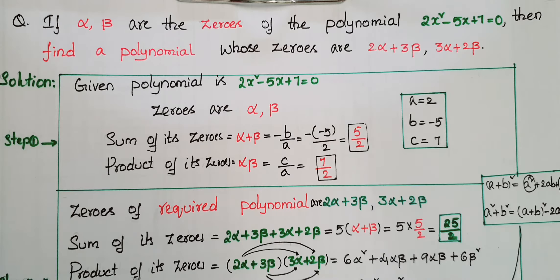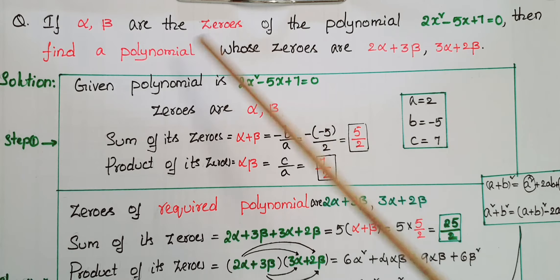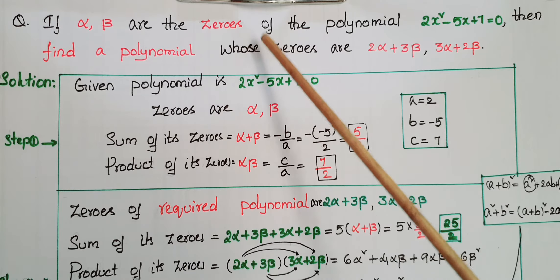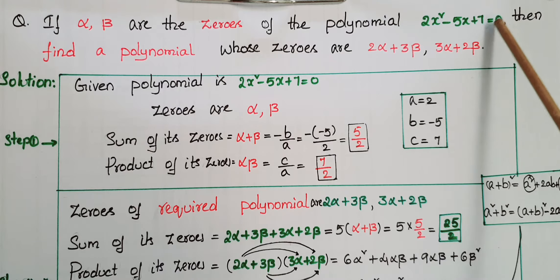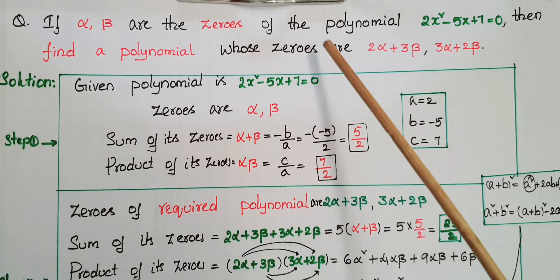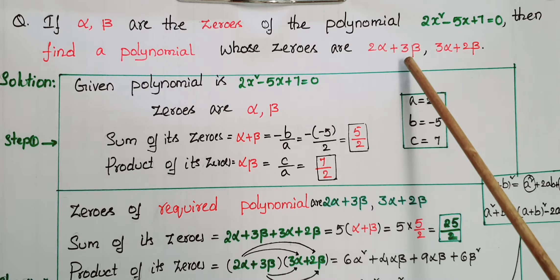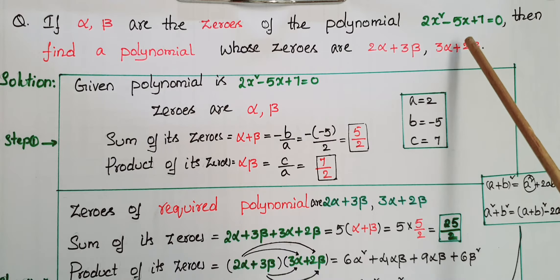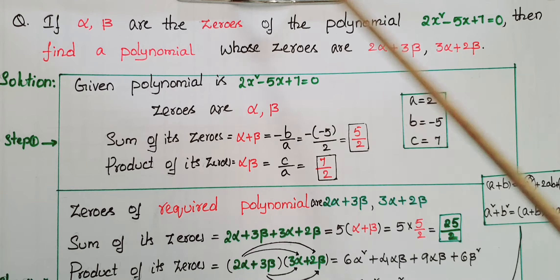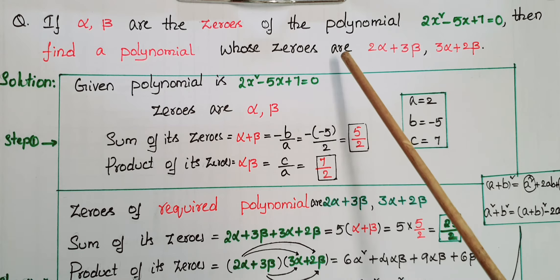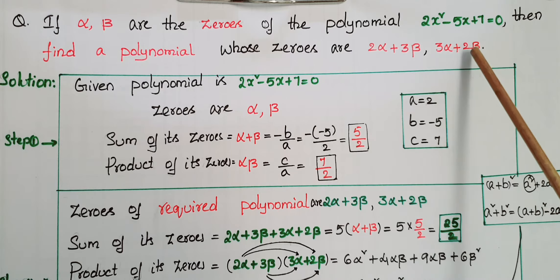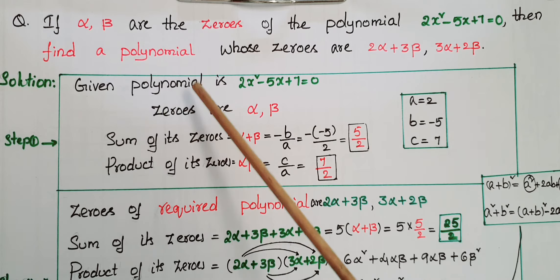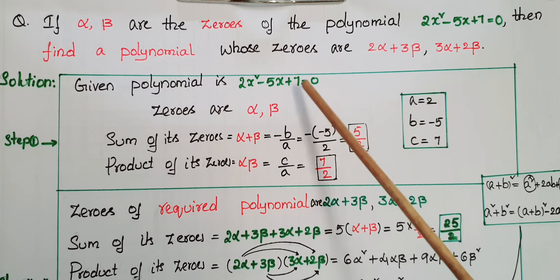Today I am going to tell the solution of the given problem. If alpha and beta are the zeros of the polynomial 2x² minus 5x plus 7 equals 0, then find a polynomial whose zeros are 2α+3β and 3α+2β. Here in the first polynomial the zeros are alpha and beta, and we have to find another polynomial which has the zeros 2α+3β and 3α+2β.